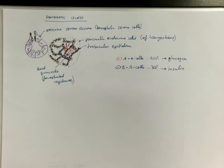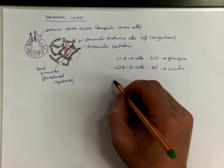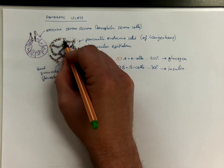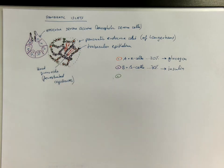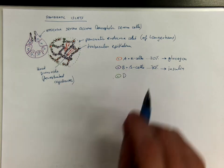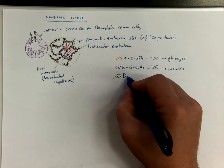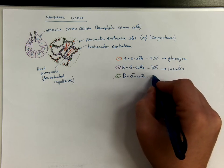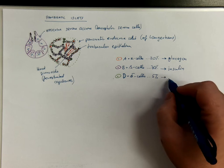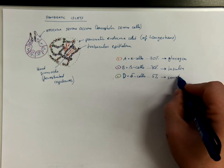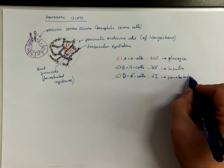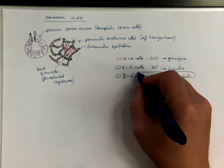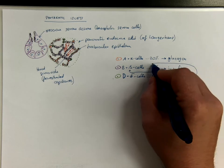Then we got D or delta cells. They produce somatostatin, which is a tissue hormone that by paracrine mechanisms inhibits both the B as well as the A cells.